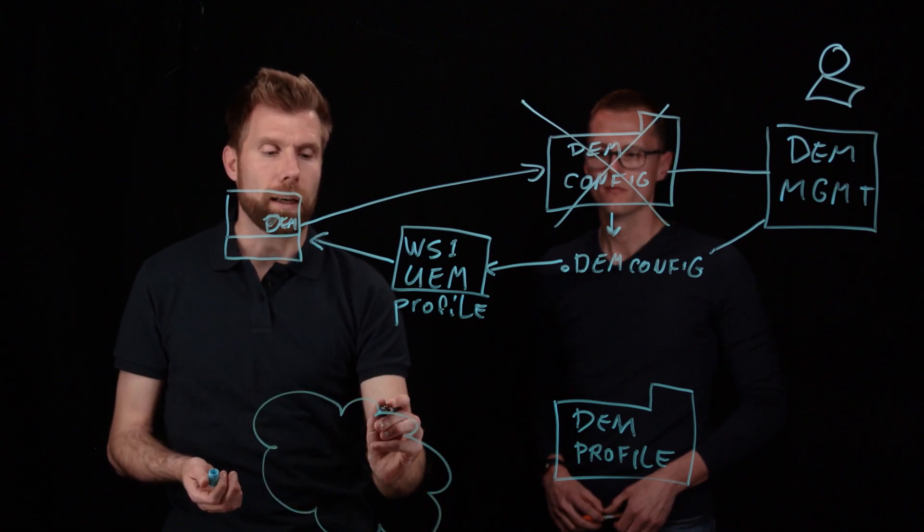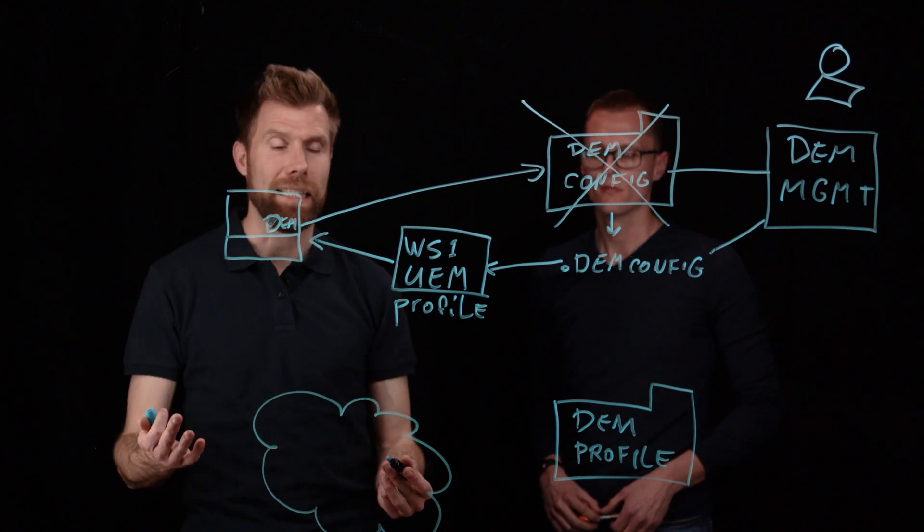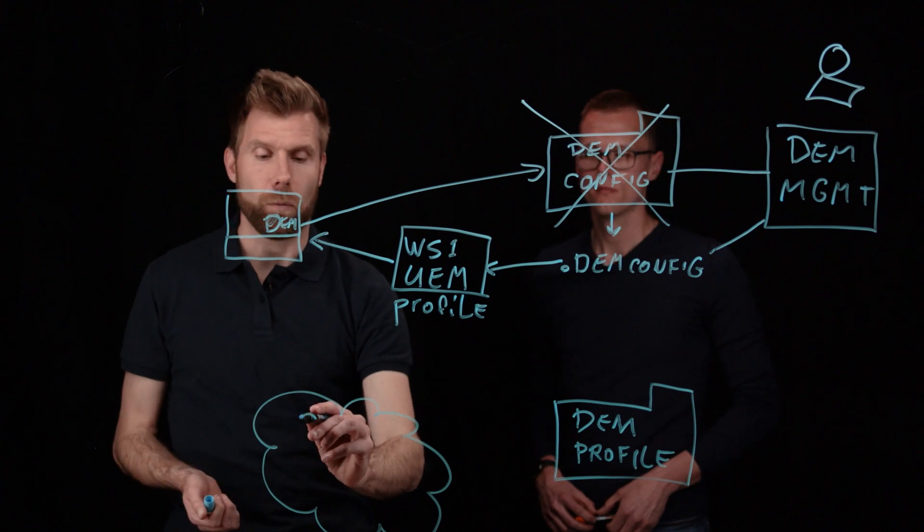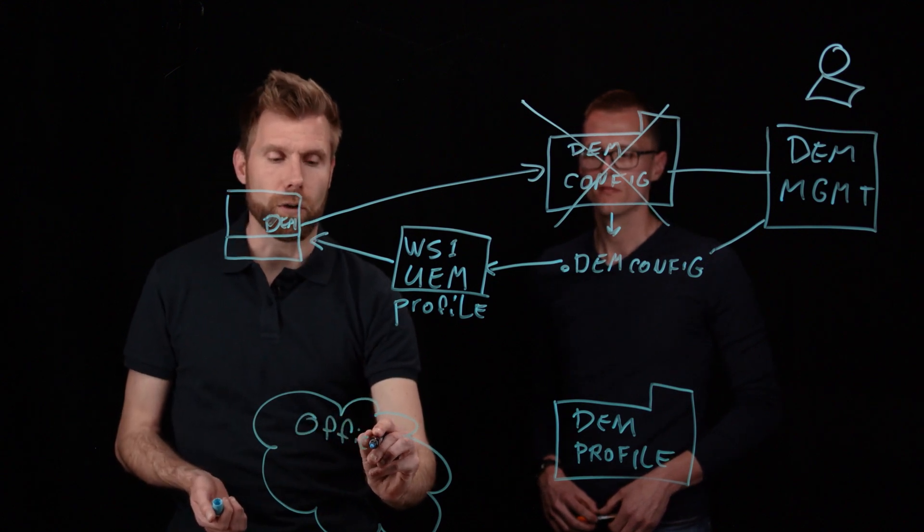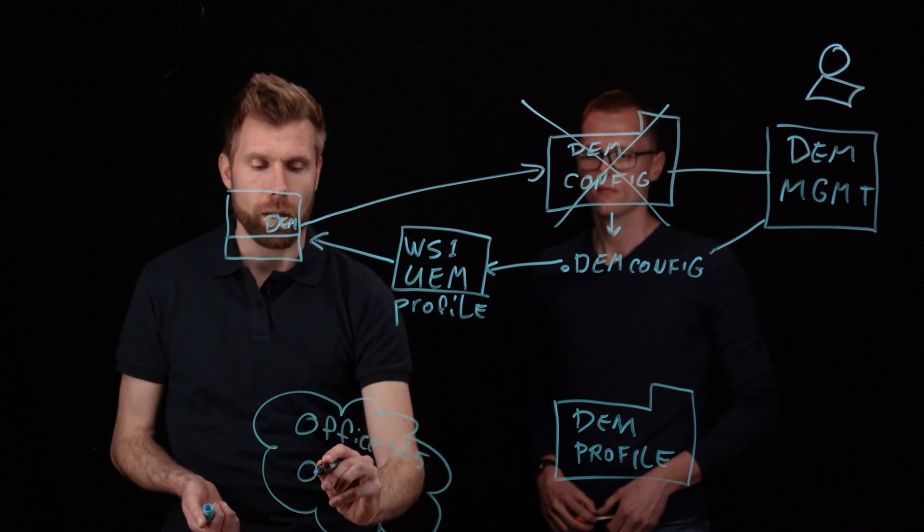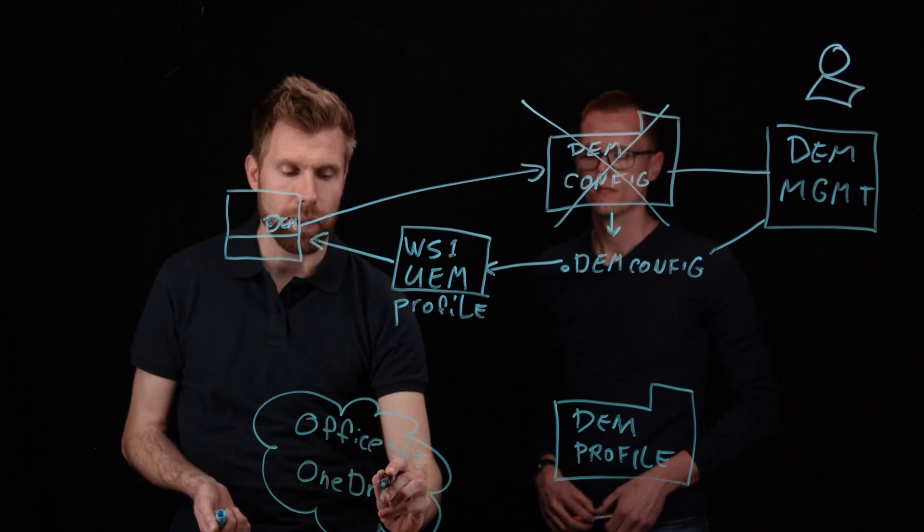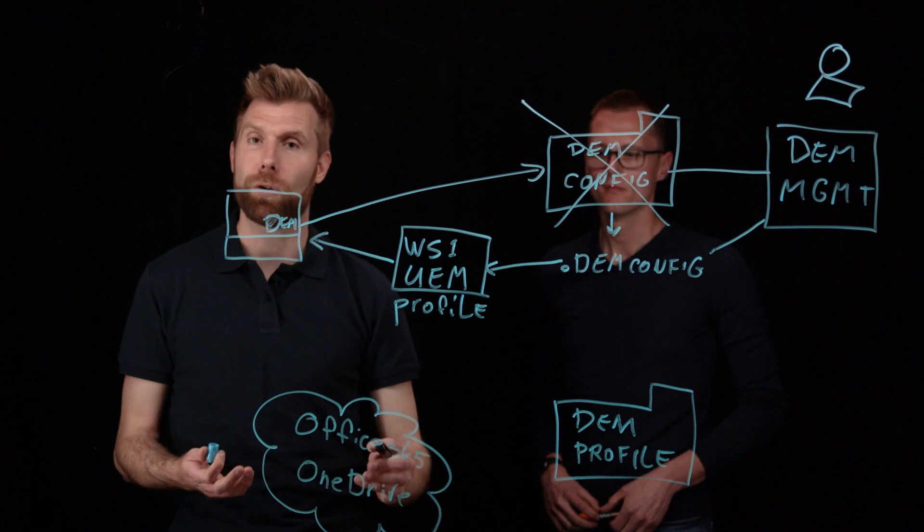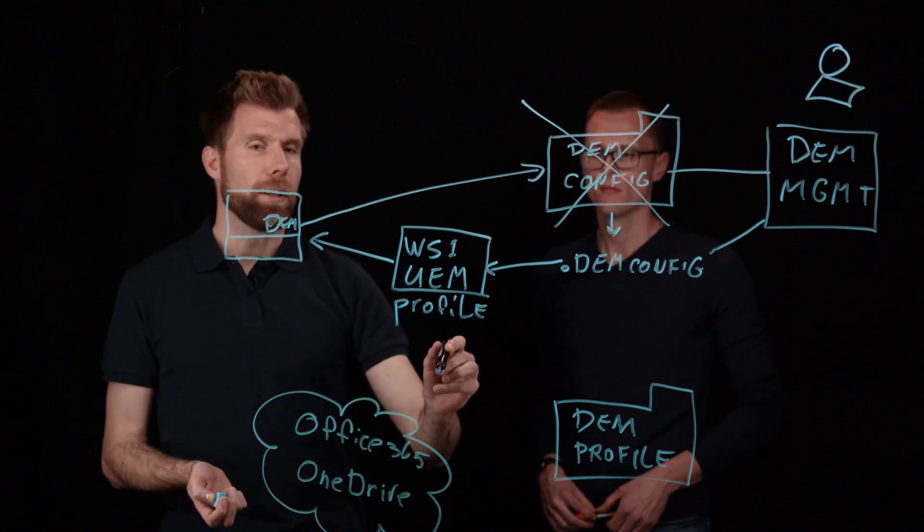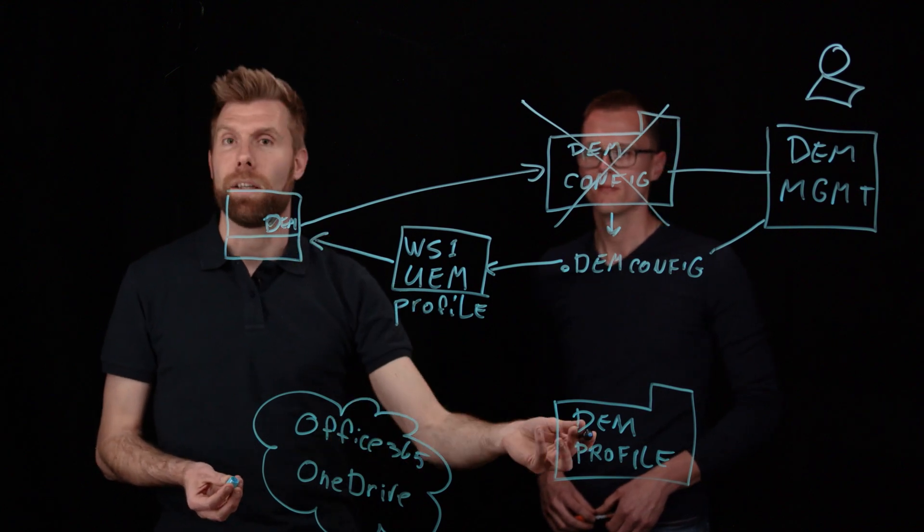And the cloud that we currently support with this release, the 2111 DEM release, is OneDrive. So what we've seen is that most of our customers already adopted Office 365. And one of the benefits of Office 365 is that it comes with a personal storage location called OneDrive. So what we thought is what if we can store the personal files for DEM in OneDrive instead of using this file share.